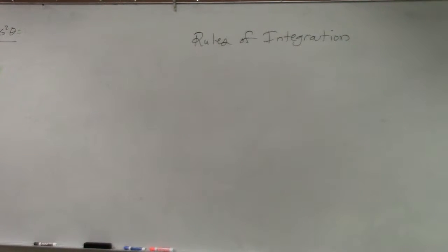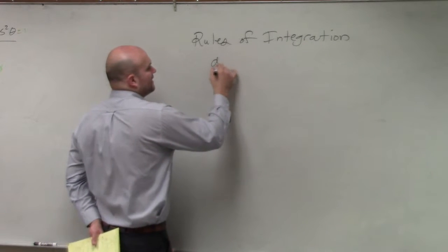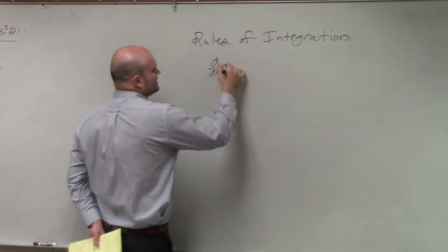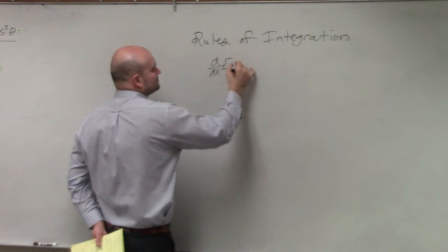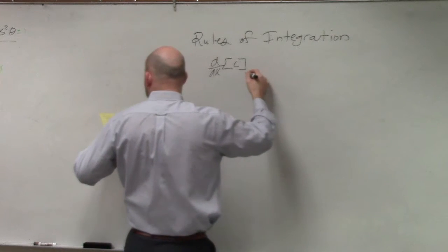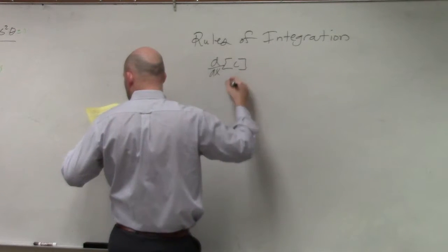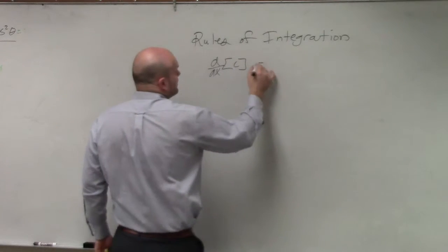So the first rule basically comes with one that we've already kind of talked about. If we have d/dx of any constant c, that equals 0.